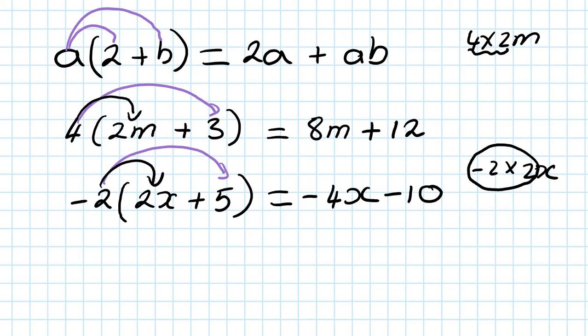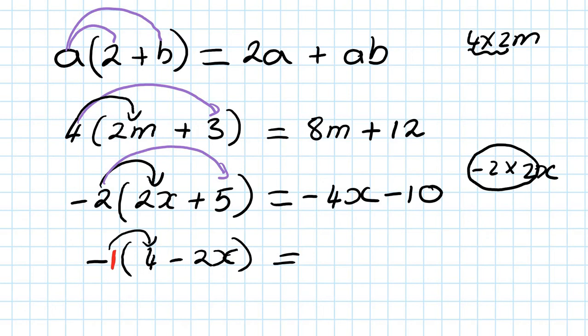Next one: minus, open bracket, 4 minus 2x. There's nothing in front of the bracket, so that means 1, which means it's negative 1. So minus 1 times 4 is minus 4. And then minus 1 times minus 2 — minus times minus gives you a positive. So 1 times 2 is 2, so it's 2x.